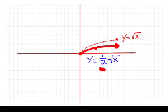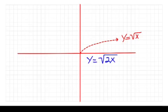The tricky ones are the horizontal ones. That's when we put the number inside and multiply. Here we've multiplied x by 2 underneath the square root. This actually has the effect of being not a stretch, but a compression of 1/2.